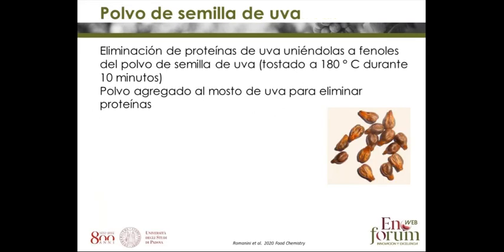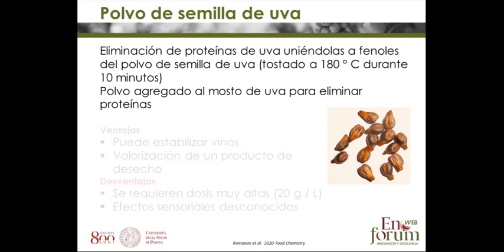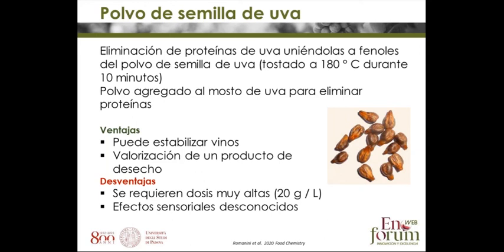A very recent publication from 2020 studied grape seed powder as a fining agent. Grape seed powder is rich in tannins — especially after toasting — and these can aggregate and bind proteins to eliminate them. The advantage is that the wine becomes stable and you also valorize a byproduct of the industry. The downside is that you need a lot of it — 20 grams per liter — and no sensory study has been done yet, but it is something in the pipeline.